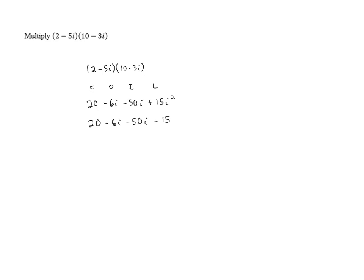Once we take care of that, we can combine the real and the imaginary parts. 20 minus 15 is 5. Negative 6i minus 50i is negative 56i. And we end up with 5 minus 56i as our final answer.